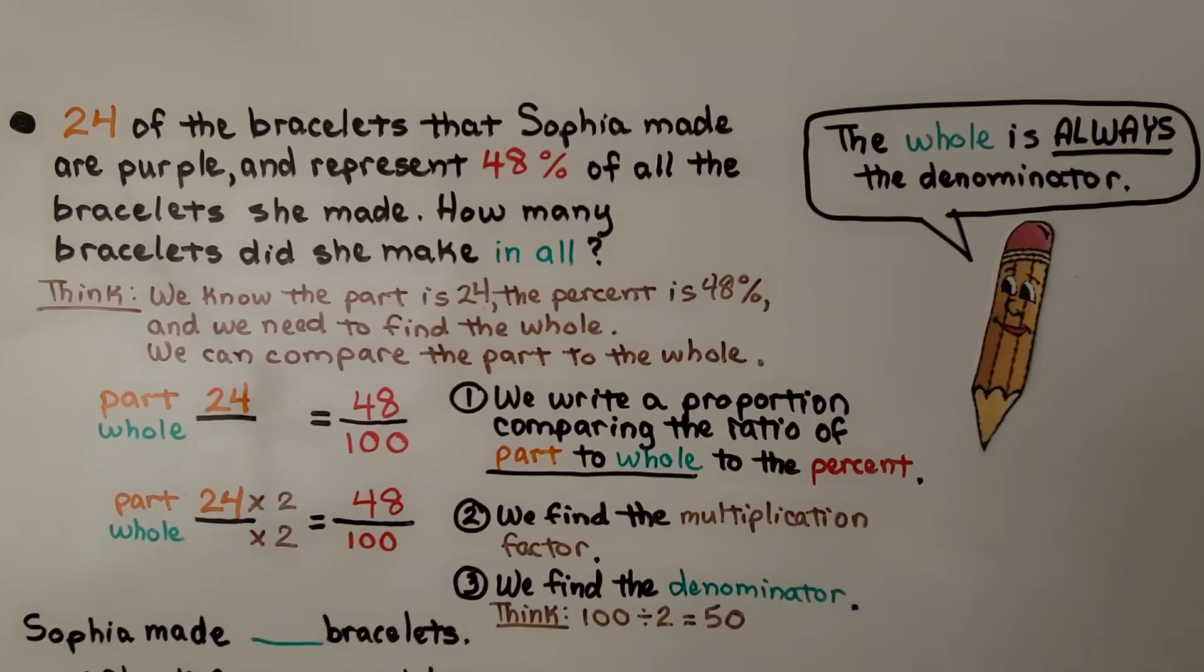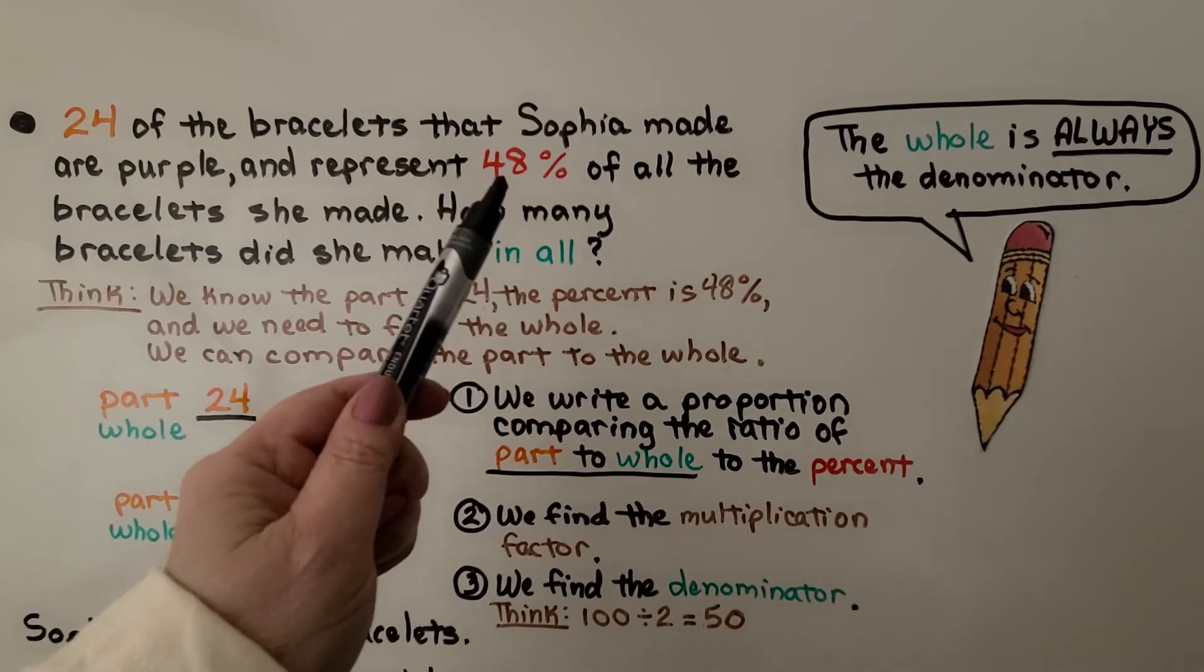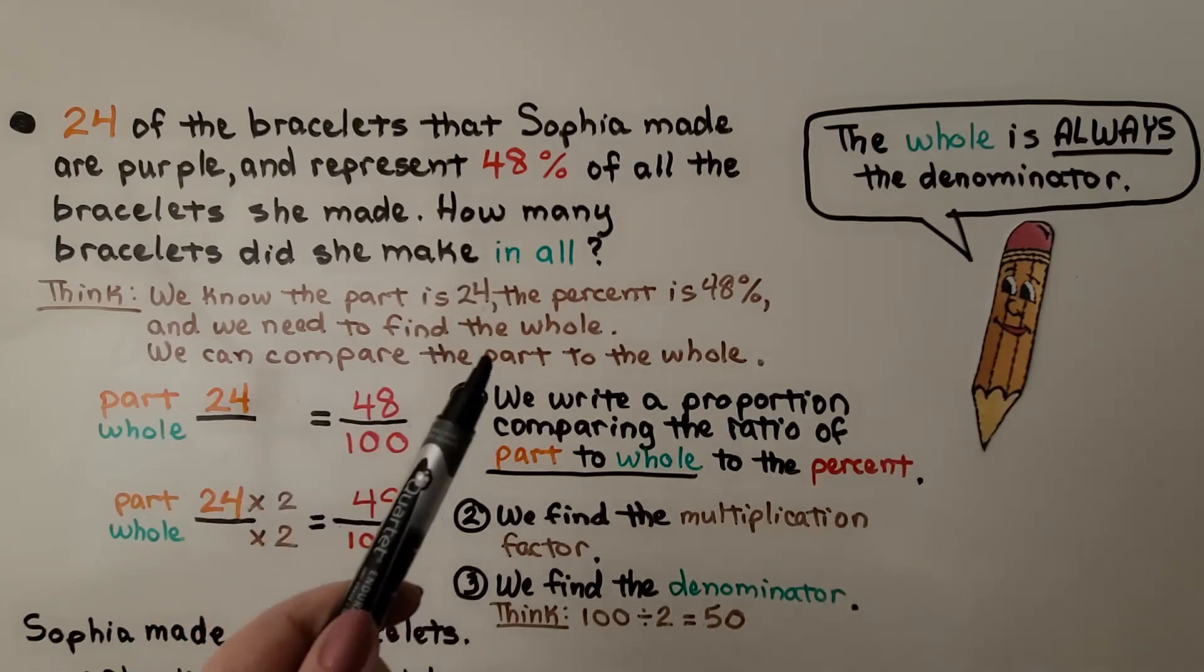24 of the bracelets that Sophia made are purple and represent 48% of all the bracelets she made. How many bracelets did she make in all? We think: we know the part is 24, we know the percent is 48%, we need to find the whole.